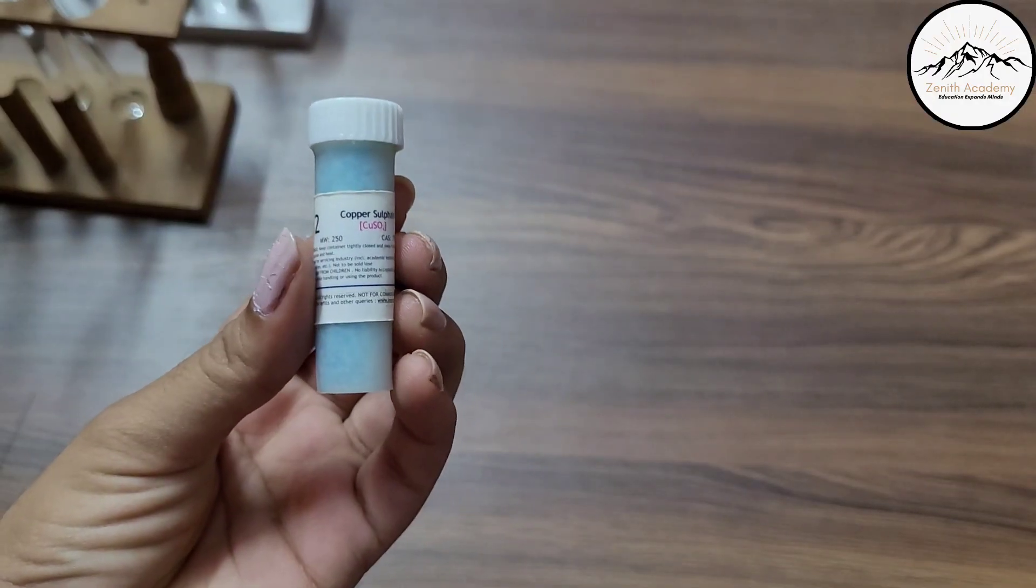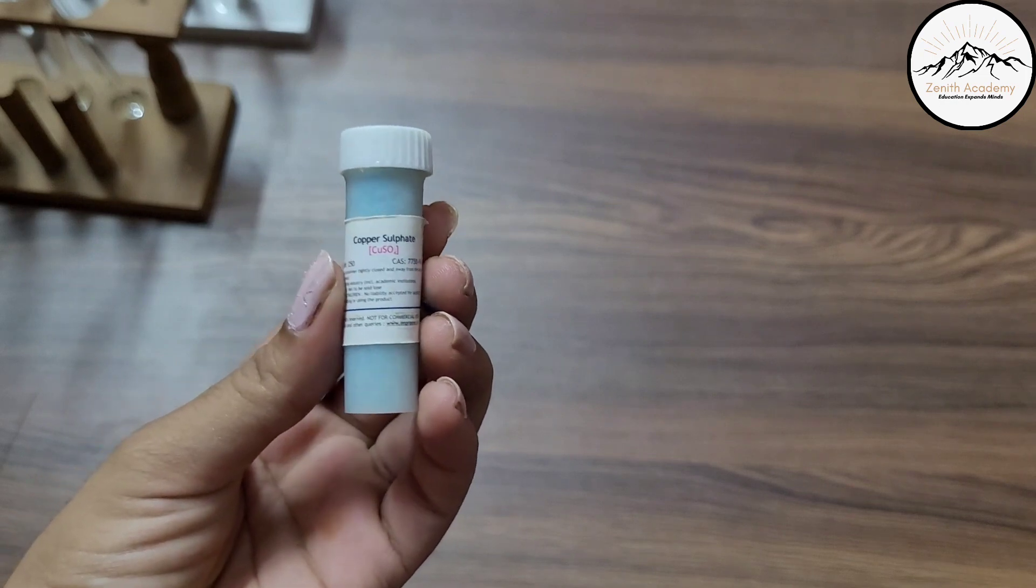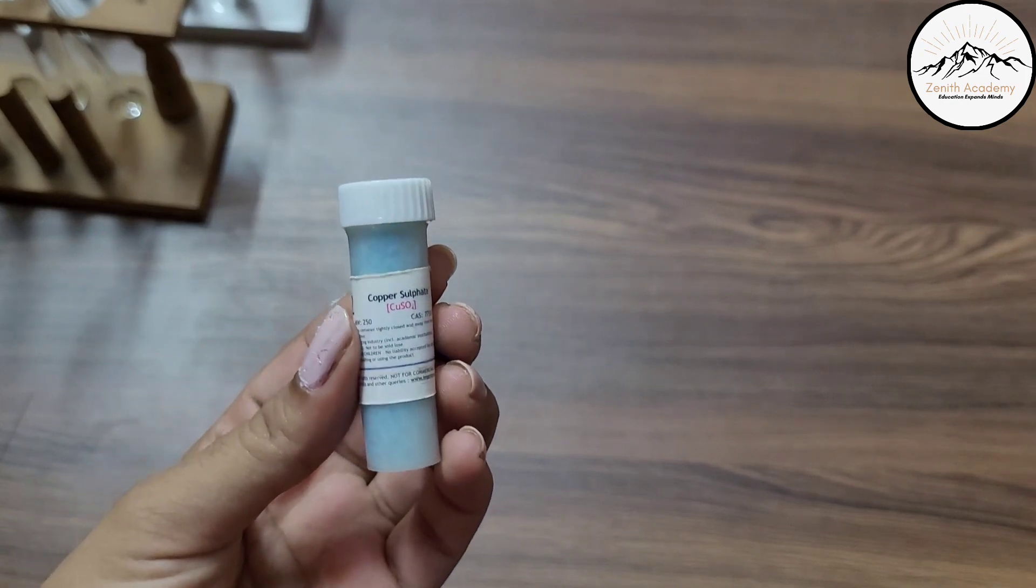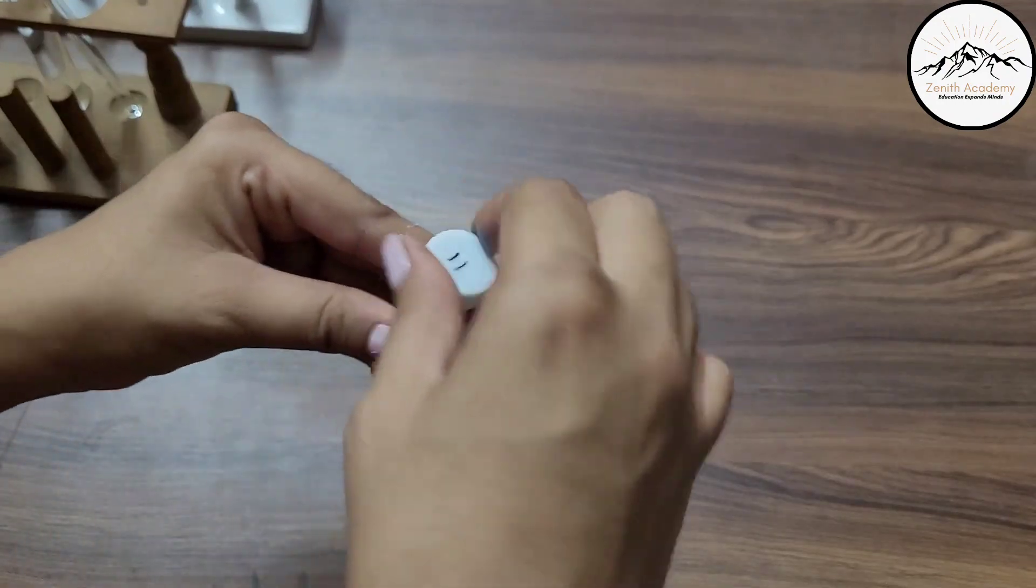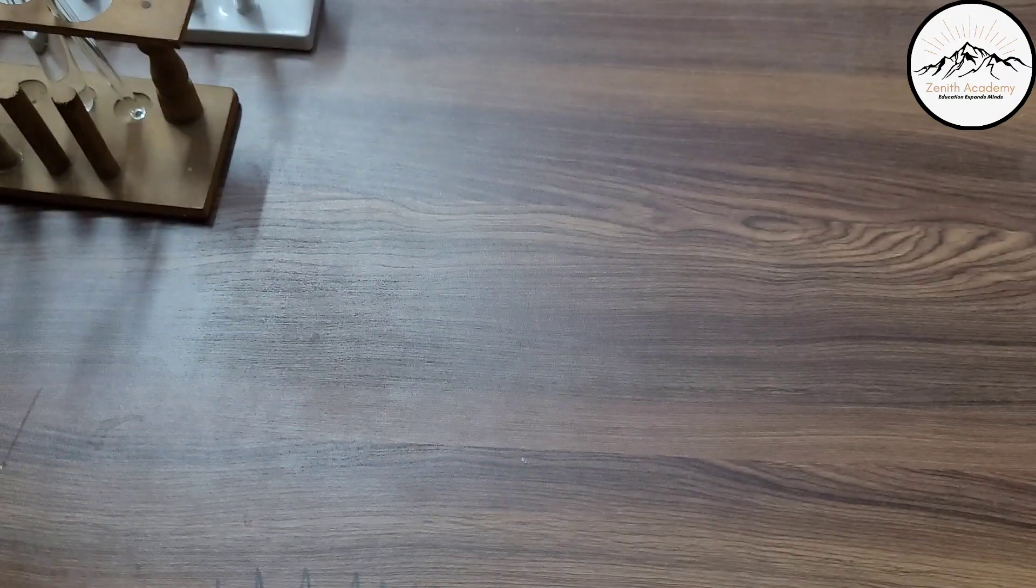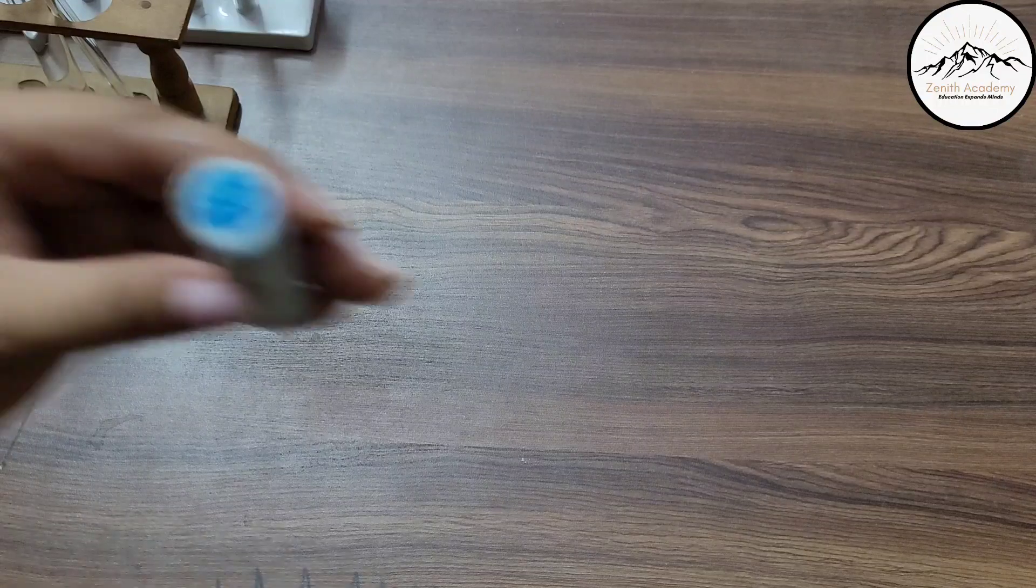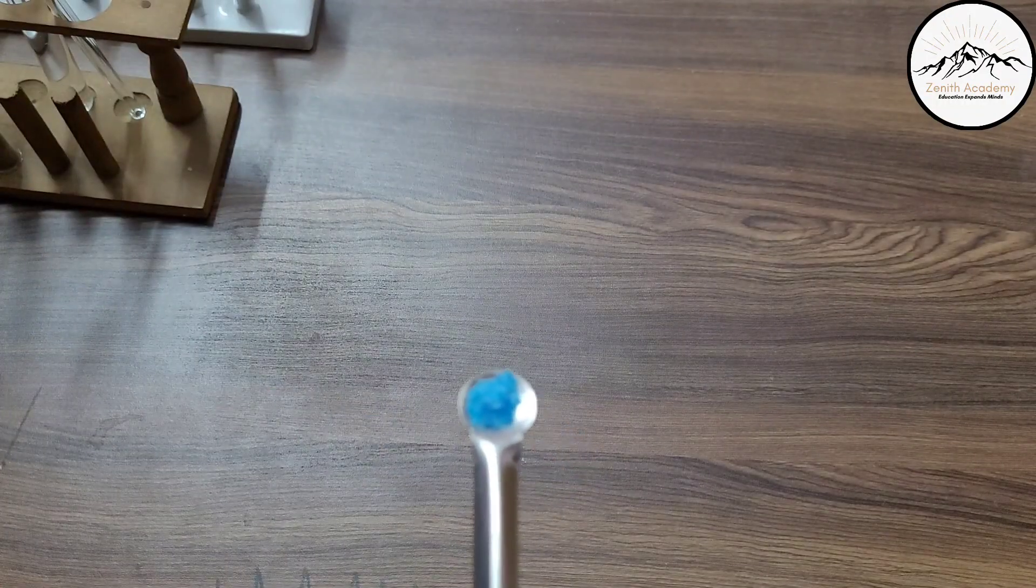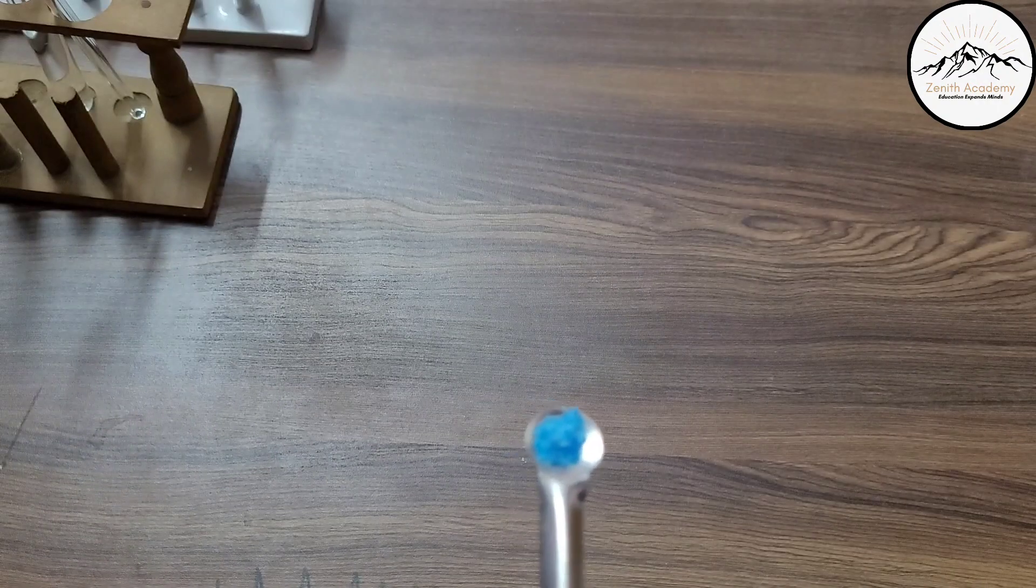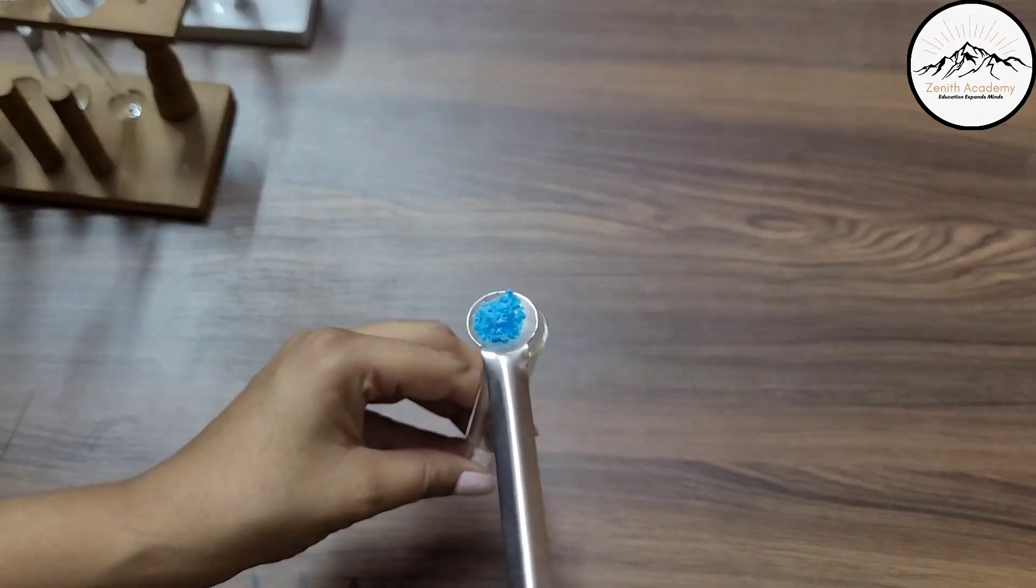So this is the copper sulfate, solid copper sulfate crystals. Now we will make an aqueous solution of it. So let's open it. You can see this is blue colored crystals. Now we will take this copper sulfate crystals. Add it in a test tube.